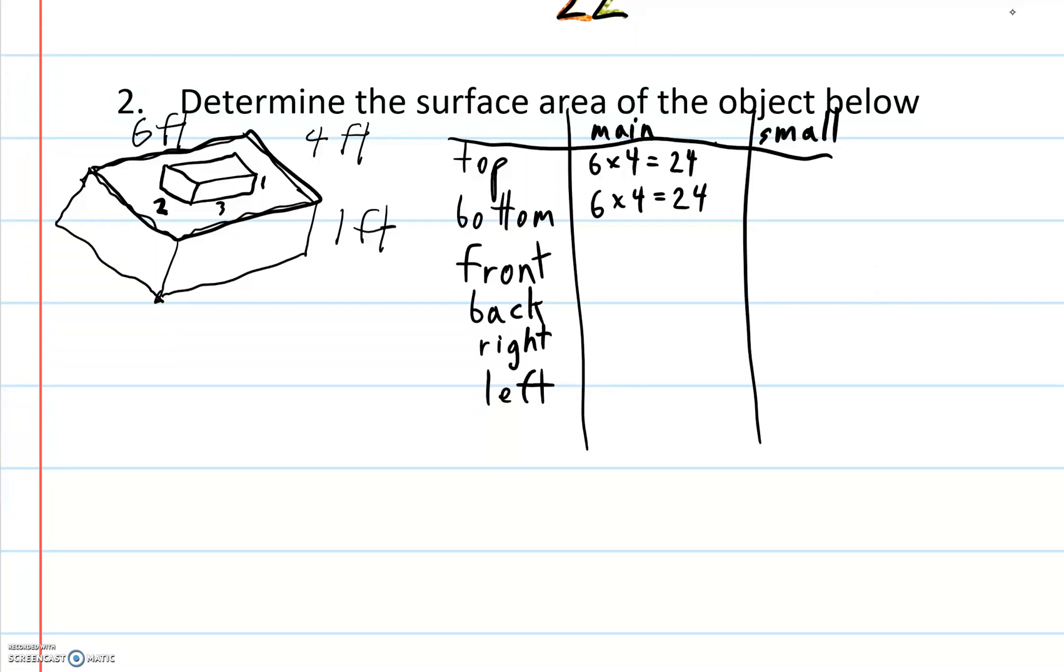Front and back are going to be the same. We're going to use this side here as my front, so that's 6 feet here times 1 foot, so 6 times 1 equals 6. And then my back is going to be the same, 6 times 1 foot. 6 times 1 equals 6.